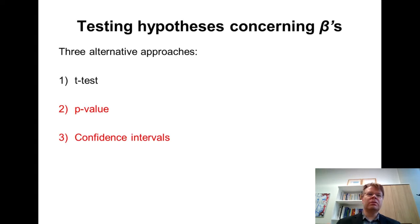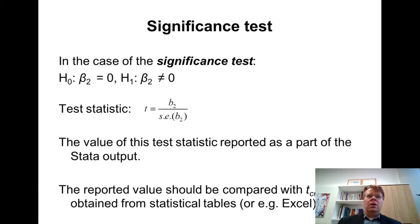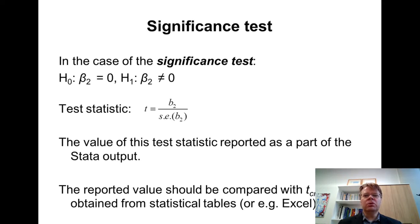P obviously refers to probability. Recall the significance test from statistical testing. The p-value, at least in the present context, is not available for any type of hypothesis.